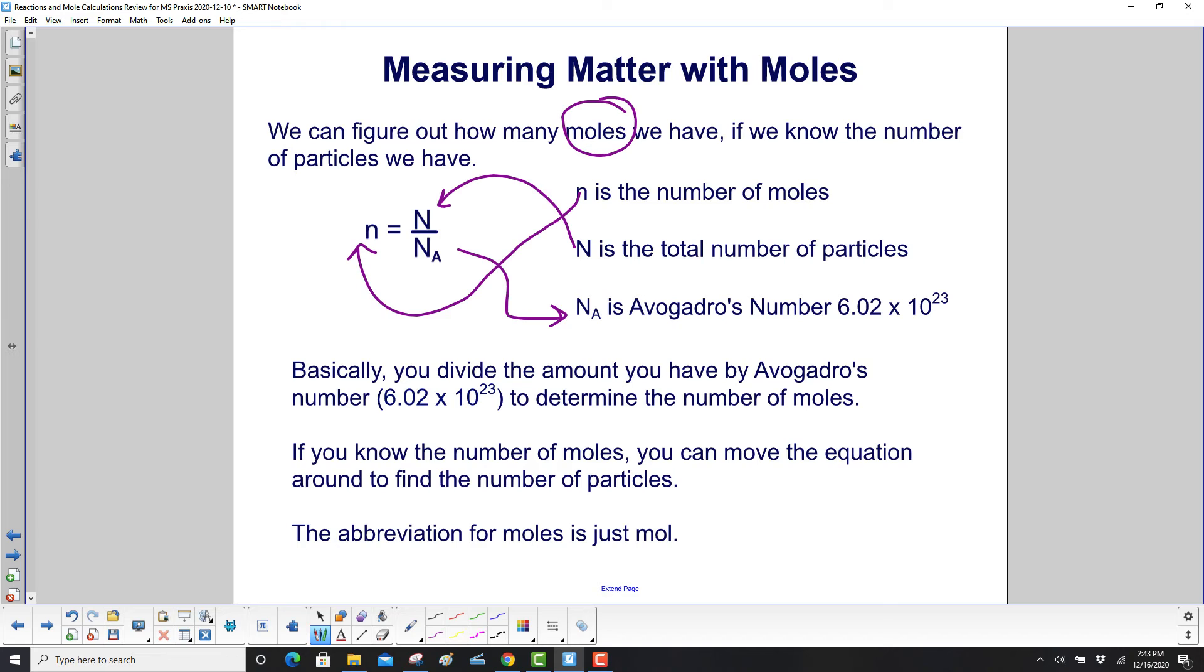Basically, you divide the amount you have by Avogadro's number to determine the number of moles. If you know the number of moles, you can move the equation around to find the number of particles. The abbreviation for moles is just mol, M-O-L.